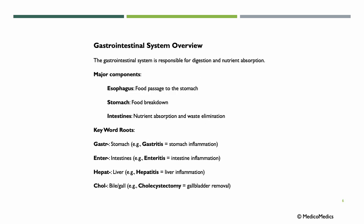Now let's look at the gastrointestinal system. The GI system is responsible for digestion and nutrient absorption. This is incredibly brief, as this is not a physiology course. The major components include the esophagus — the food passage to the stomach — the stomach itself, where food is broken down, and then the intestines, where nutrient absorption and waste elimination mainly occur.